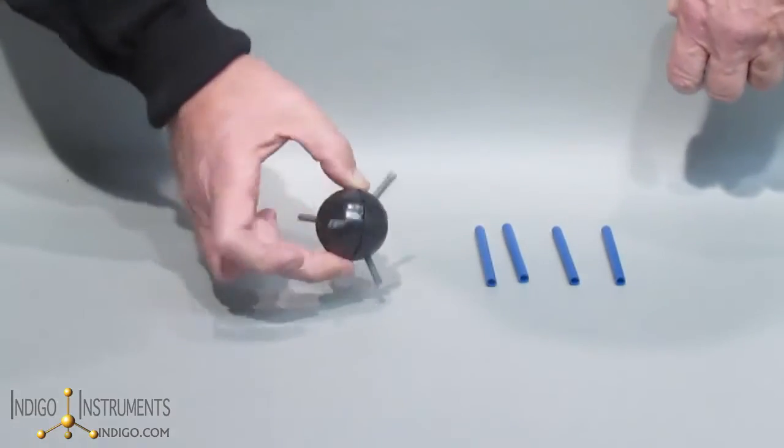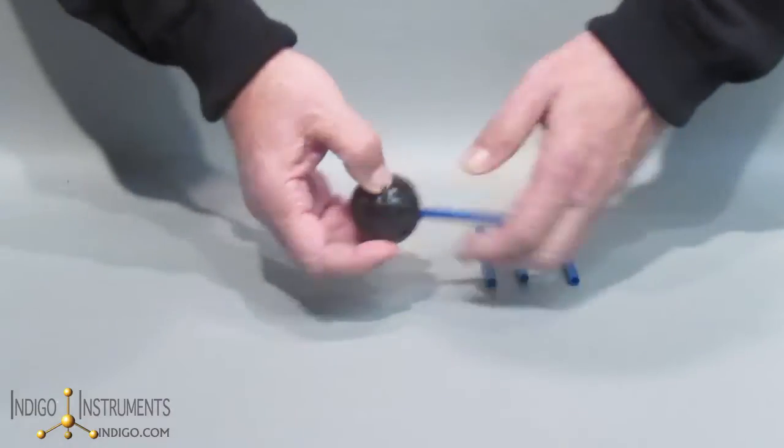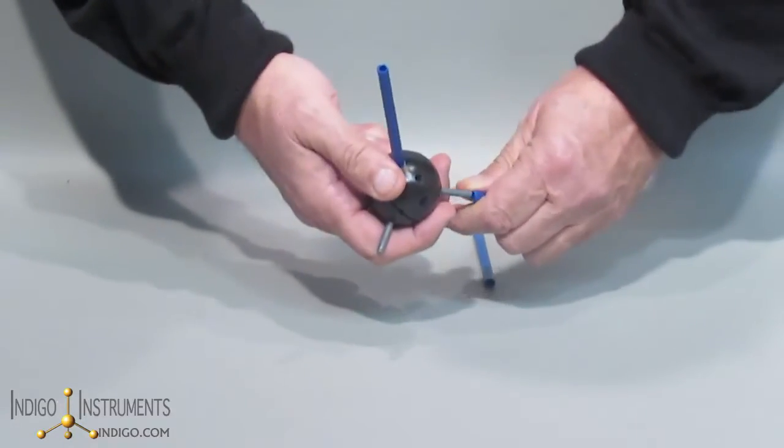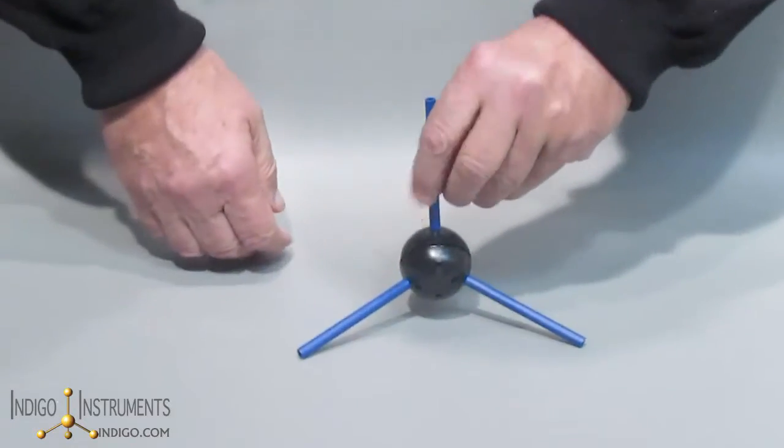And you have now the tetrahedral sp3 geometry. All you need to do now is add these bonds to finish it off, and you'll see that the tetrahedron is complete and is ready to build compounds.